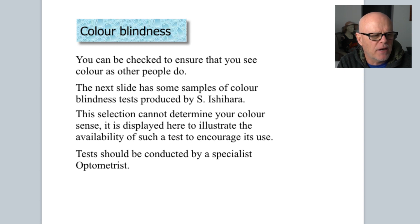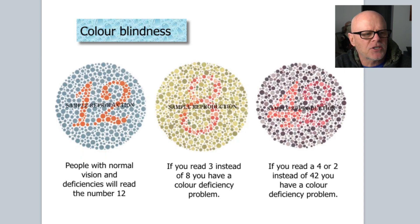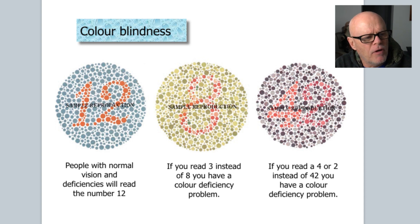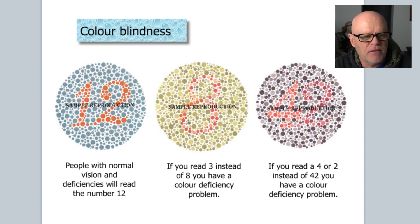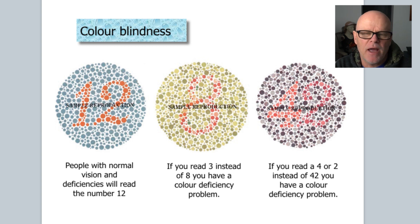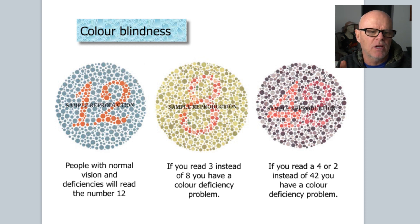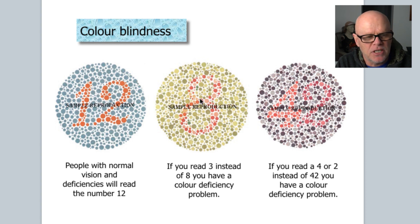You should go and get a full colour blindness test from an optometrist if you're worried. But this shows how these tests work: people with normal vision will read the number 12. If you can't see that number 12, you have a deficiency. The second one in the middle — if you read three instead of eight, you have a colour deficiency. The one on the right — if you read four or two instead of 42, you also have a colour deficiency. When you do these tests, they have a book with stacks of these to work through.